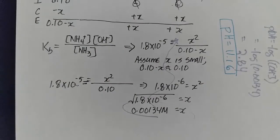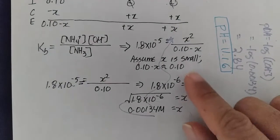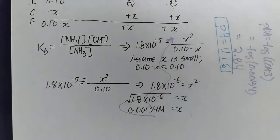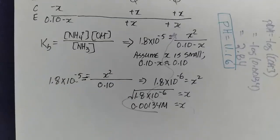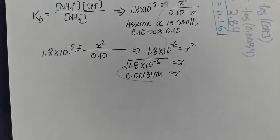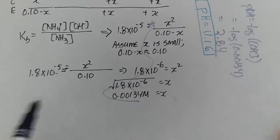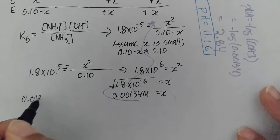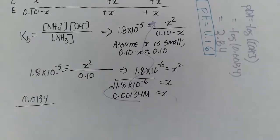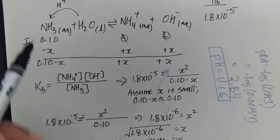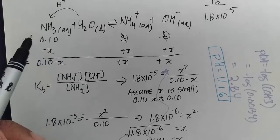We made an assumption here that x is small, 0.10 minus x is nothing more than 0.10, making the assumption that the forward reaction is negligible. We want to make sure our assumption is correct before we quote this as the answer. The way we do that is we take the value of x we found, 0.0134, and divide it by the concentration initially given to us, the concentration in the bottle. The problem tells us that the concentration of NH3 ammonia is 0.10.